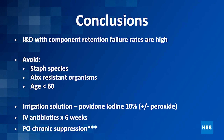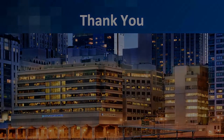In conclusion: IND with component retention is possible, but failure rates are very high. Be very selective — try not to do them in staph species, antibiotic-resistant organisms, or patients under age 60, because you don't want to put someone on chronic PO antibiotics. Use adjuvant irrigation solutions, make sure you use adjuvant treatments, IV antibiotics for six weeks, and then chronic antibiotic suppression. Thanks very much.